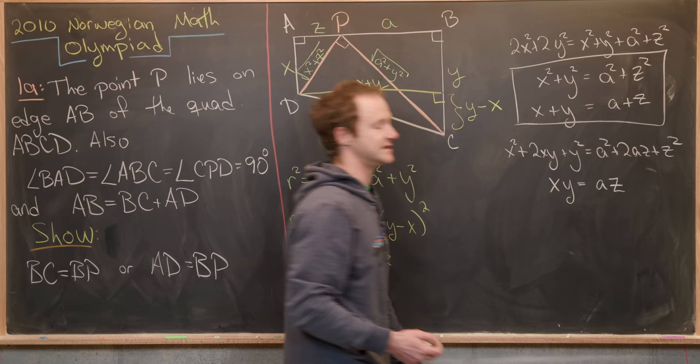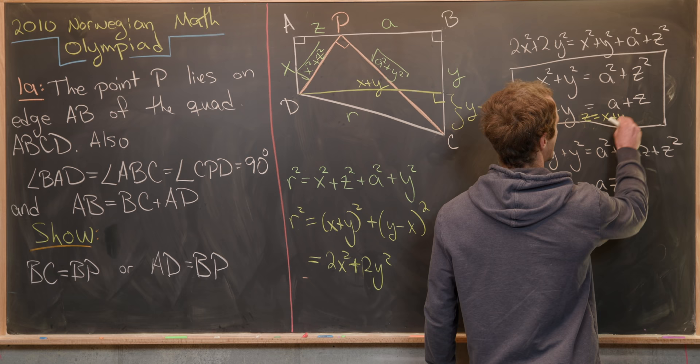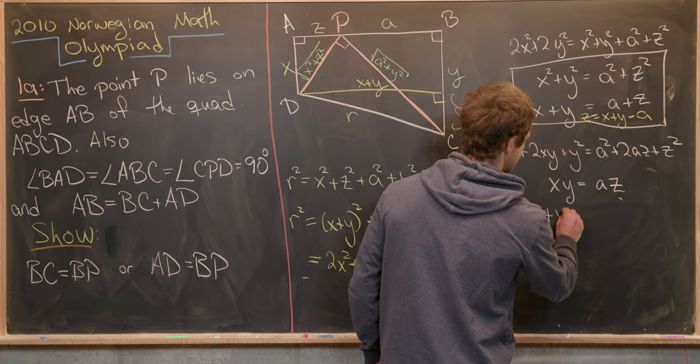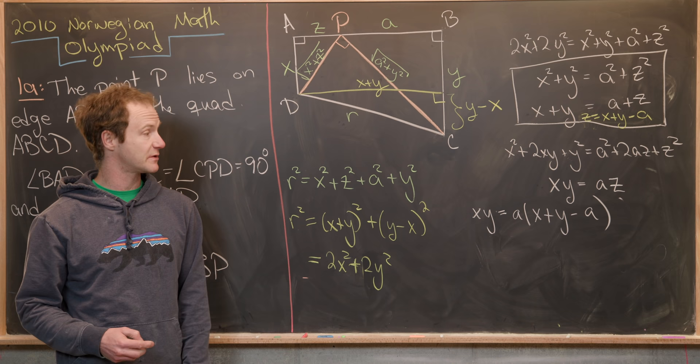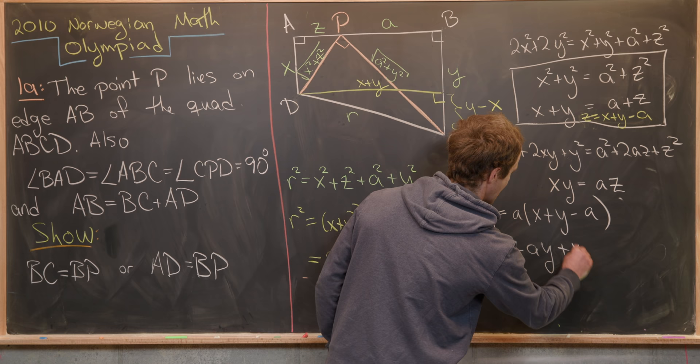Next, we can solve this equation for Z and then insert that into this equation down here. So let's see, that'll give us Z equals X plus Y minus A. Then inserted down here, we'll have XY equals A times X plus Y minus A. So we want to rearrange that so maybe we can factor it or simplify it some other way. And the way that I would like to rearrange it is A squared minus AX minus AY plus XY equals 0.